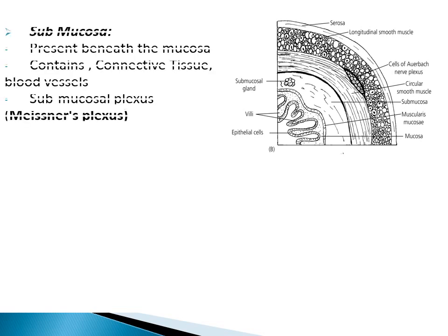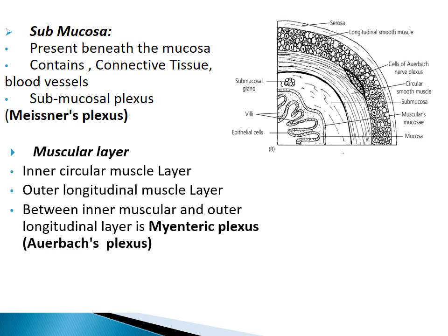Directly beneath the lamina propria, whose outer boundary rests on muscularis mucosa, is another layer called the submucosa. This submucosa has nerve cell bodies in ganglia of the submucosal plexus. Below the submucosa is an inner circular layer and an outer longitudinal layer, both made up of smooth muscles. Between the inner circular and outer longitudinal layers is a plexus called the myenteric plexus, also known as Auerbach's plexus. Finally, the outermost layer is the serosa, the outermost lining of the gut wall.